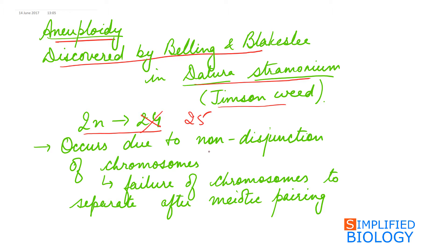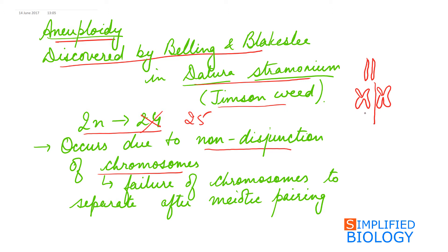Aneuploidy occurs due to non-disjunction of chromosomes. During meiotic pairing, homologous chromosomes pair with each other forming bivalents, after which tetrads are formed and they should separate. However, due to non-disjunction, the chromosomes fail to separate after meiotic pairing — so the complete pair moves to one pole while the other pole receives no chromosome.